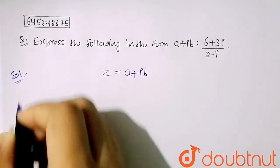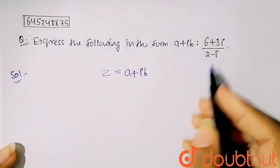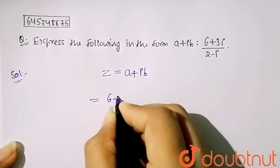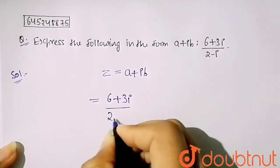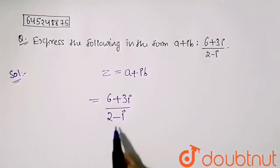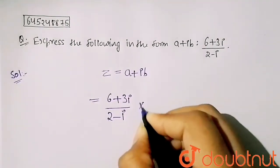This term is given: (6 + 3 iota) upon (2 - iota). So first you have to remove this complex number from your denominator. So here I will rationalize it by multiplying (2 + iota) upon (2 + iota).